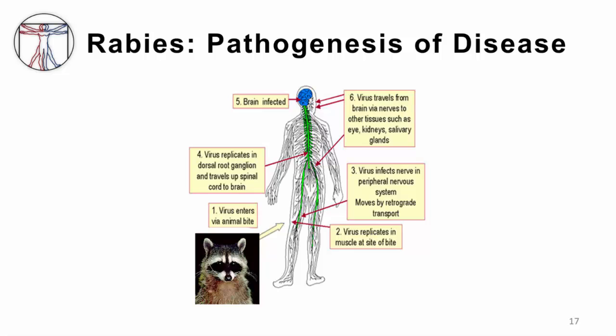Rabies spreads through the nerves to the spinal cord and brain — this is an example of direct neuroinvasion. First, there is contact with infectious saliva, usually through a bite. Then local replication occurs at the site of infection, followed by retrograde spread from peripheral nerves to the spinal cord and brain, taking somewhere between three and twelve weeks. Once the virus is in the brain, there is rapid replication and then spread back out via the nerves to the salivary glands and other organs, with viral shedding in the saliva and onset of symptoms.